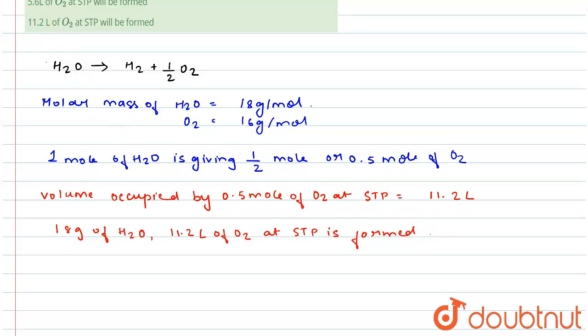So now we are given that 9 gram of water is electrolyzed completely.